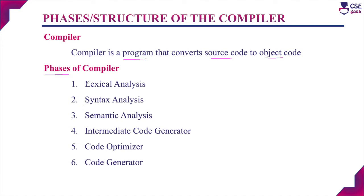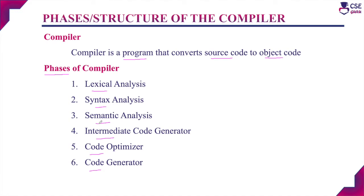Accordingly, there are six different phases of the compiler: lexical analysis, syntax analysis, semantic analysis, intermediate code generator, code optimizer, and code generator. So these are all the six different phases of the compiler.